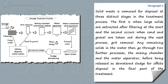The first is when large solids are extracted after filtering at the start. The second occurs when sand and gravel are taken out during the next process, grit removal. Any remaining solids in the water then go through two further processes: the mixing chamber and the water separator, before being released as dewatered sludge for off-site disposal in the final part of the treatment.